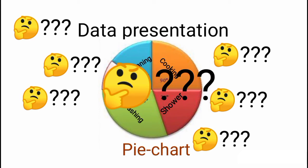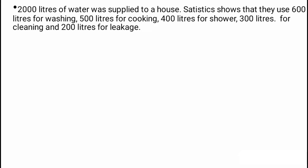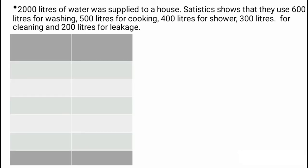So let's go back to the question that gave us this data. 20,000 liters of water was supplied to a house. Statistics show that they use 600 liters of water for washing, 500 liters for cooking, 400 liters for shower, 300 for cleaning, and 200 liters on leakage. To solve any question on a pie chart, we first need to derive our table of frequency.